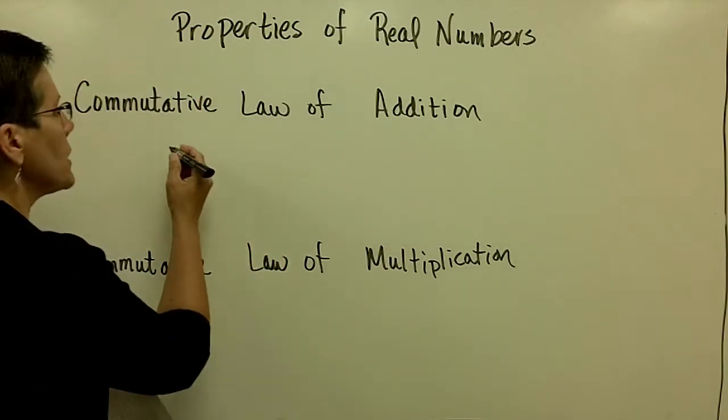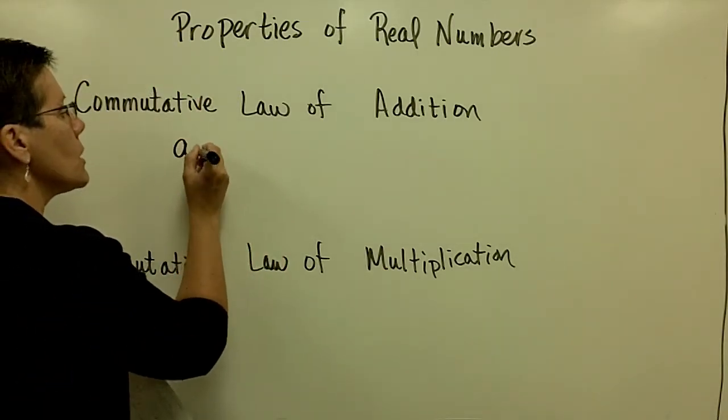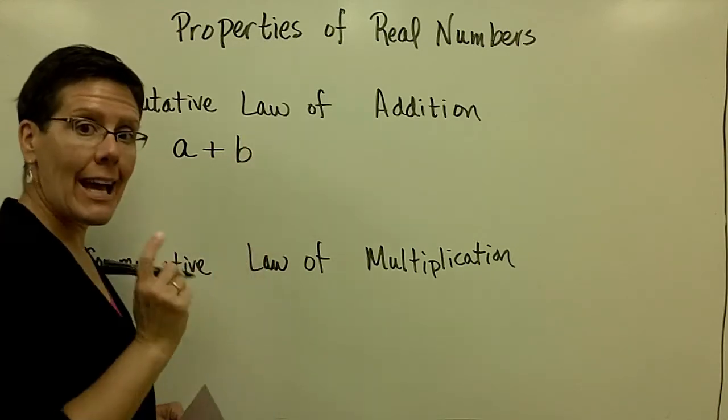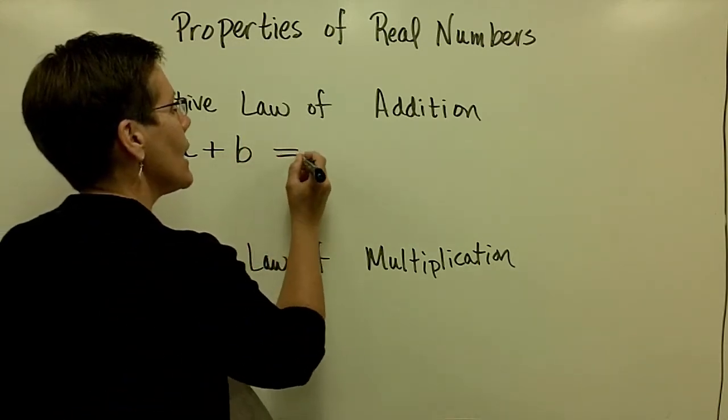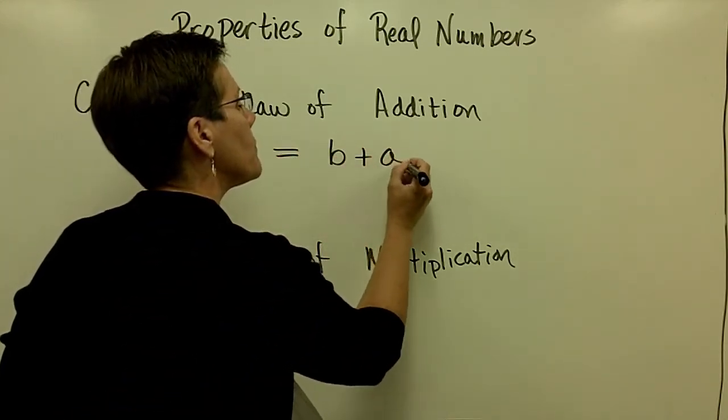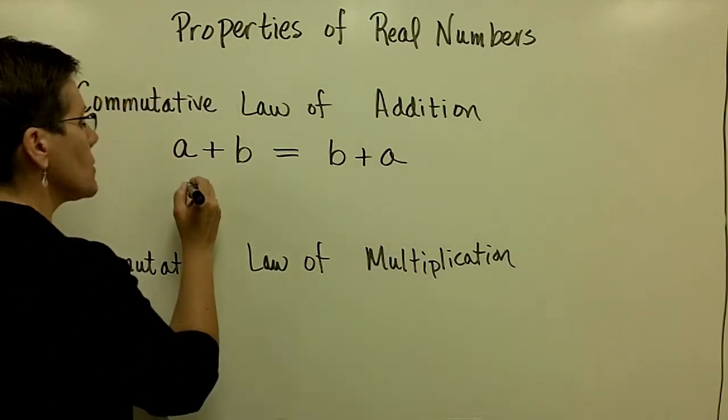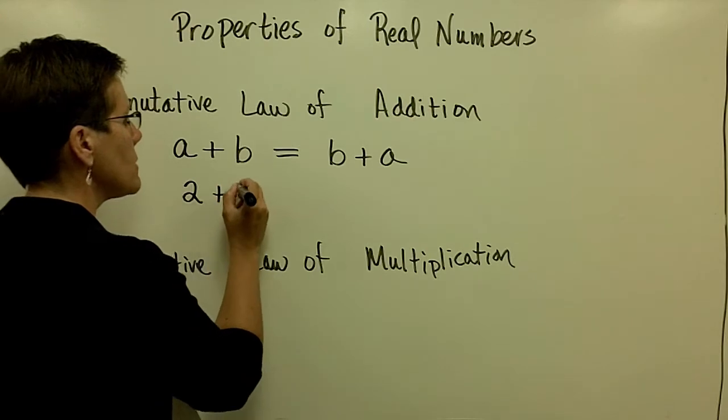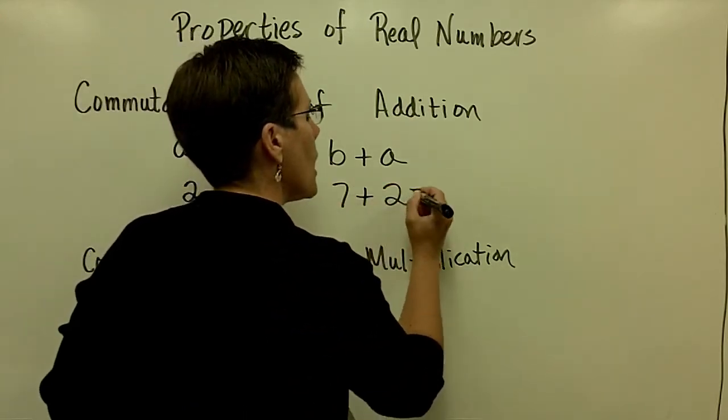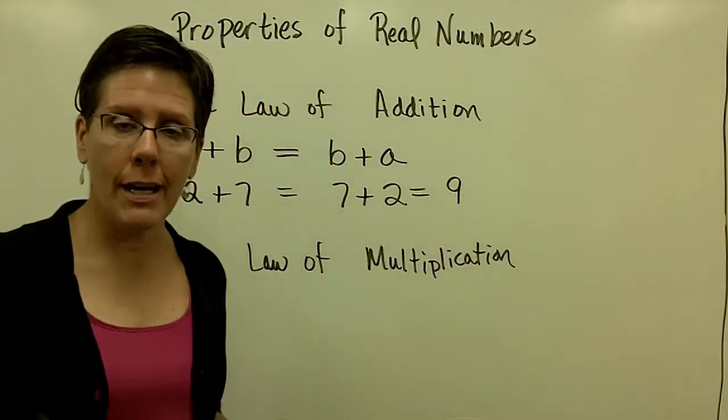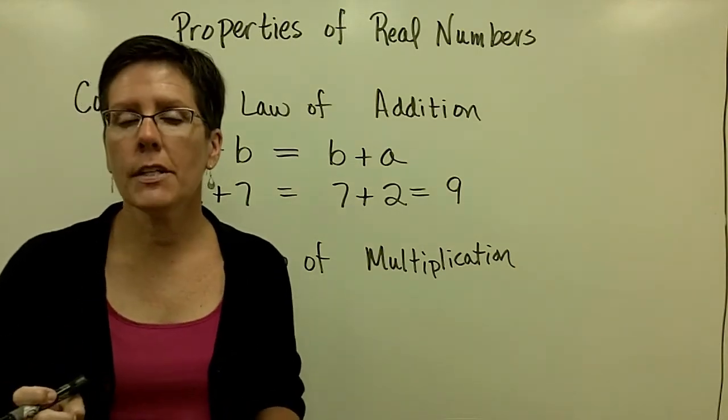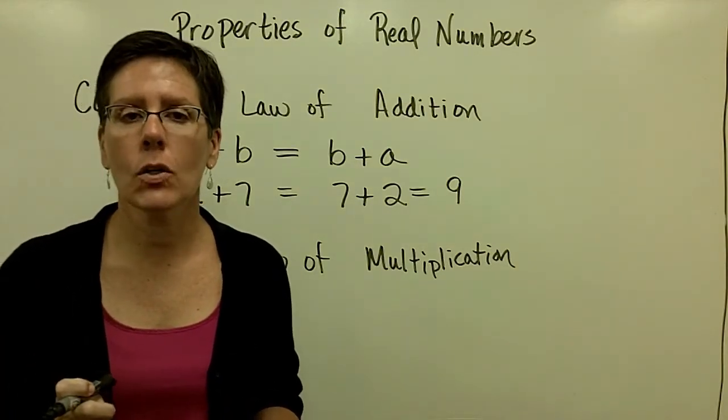All they mean for addition is that you can take two things and add them together in any order. A plus B, B plus A, you get the same results. For example, 2 plus 7 and 7 plus 2 are both equal to 9. It's the commutative law of addition and I can add in any order.